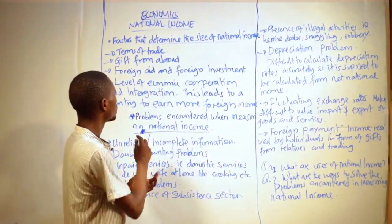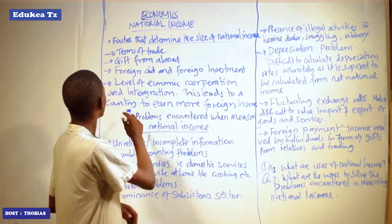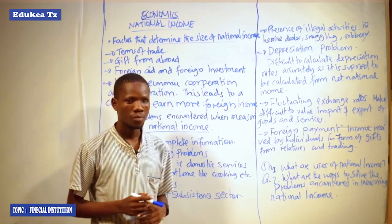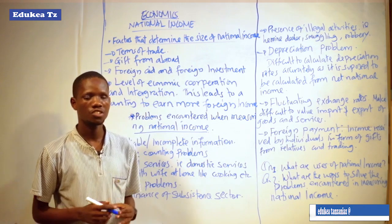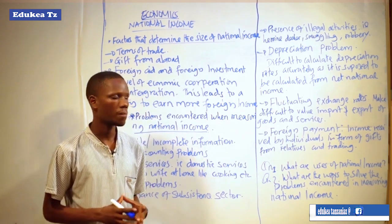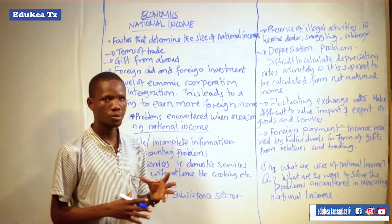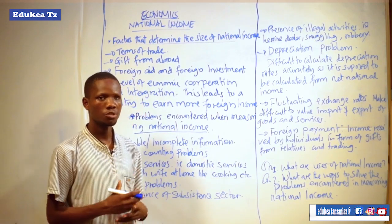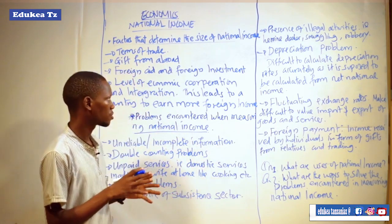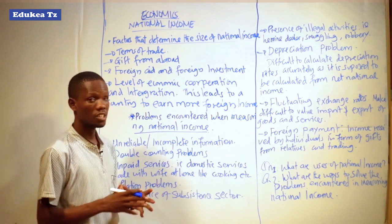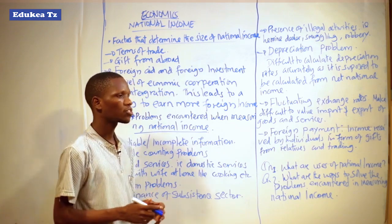Proceeding with the factors that determine the size of national income, the next factor is terms of trade. A country with favourable terms of trade experiences a large size of national income. Favourable terms of trade means the exchange between exports and imports of goods and services is well-balanced, so there is no loss in the exchange.